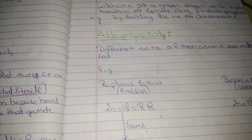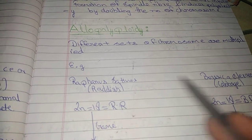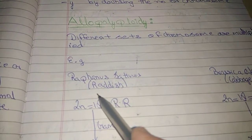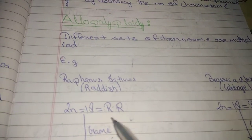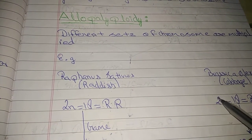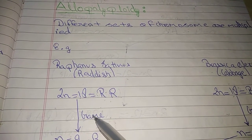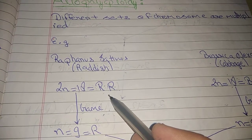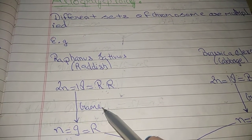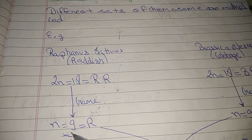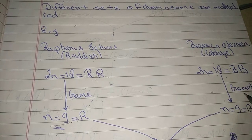Taking the example of Raphanus sativus (radish) and Brassica oleracea (cabbage): in Raphanus sativus, 2n = 18, symbolized as RR, and in Brassica oleracea, 2n = 18, symbolized as BB. They undergo meiotic division (reduction division), giving n = 9 for R and n = 9 for B.